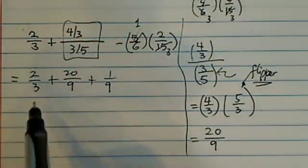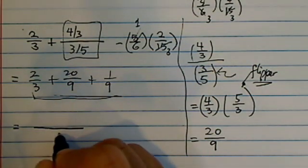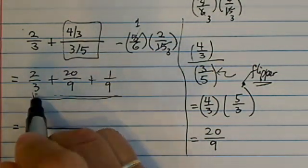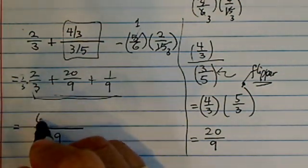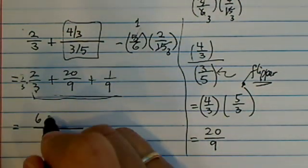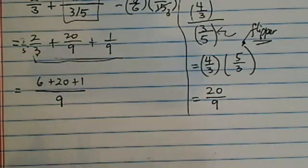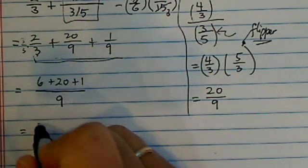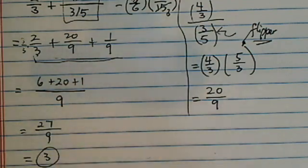And then now we need a common denominator. The common denominator is a number that covers everything. So if I want to make this one a 9, I need to do 3 times 3 and the top becomes a 6. The rest of the stuff is already 9 so I'm going to add them together.